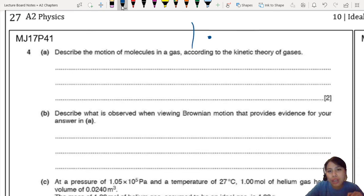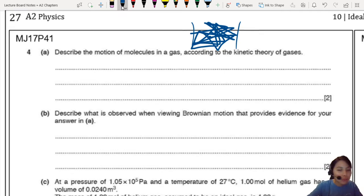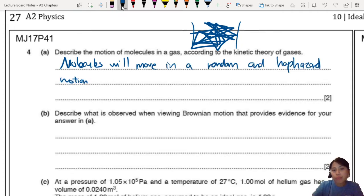So imagine this particle, you have some walls. It's going to travel in a straight line, hit the wall, bing-bang-bong-bong. So it's very random. It's all these straight lines. So eventually, you're going to look at a path like that. So how do you describe that motion? Well, the first thing that should come to mind is that the molecules will move in a random and haphazard motion.